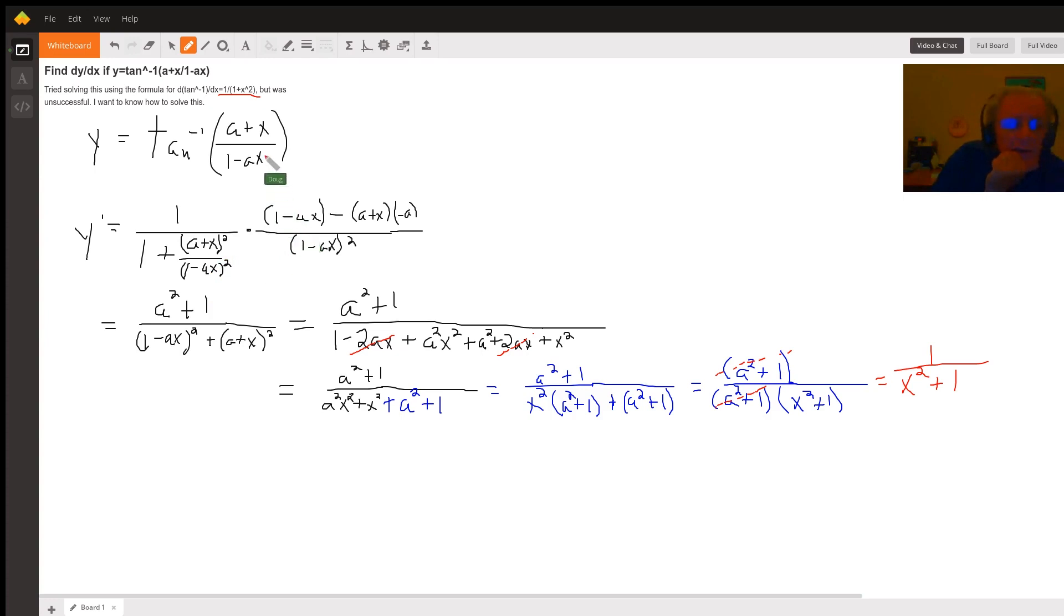Now, to get the derivative of the inside, to apply the chain rule, I have to use the quotient rule. So it's the denominator, 1 minus ax times the derivative of the numerator. A is a constant, so the derivative of x is just 1, minus the numerator, a plus x times the derivative of the denominator. The derivative of the minus x term is minus a, all over the denominator squared.